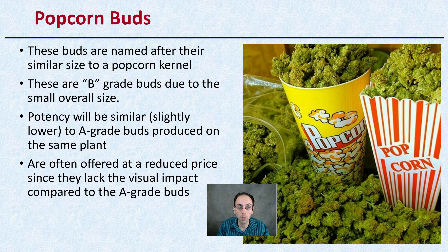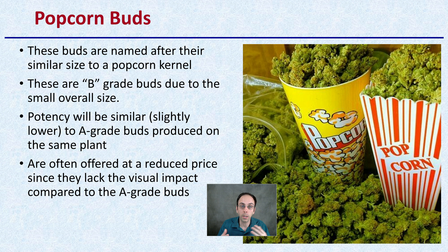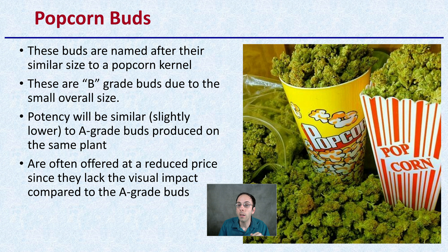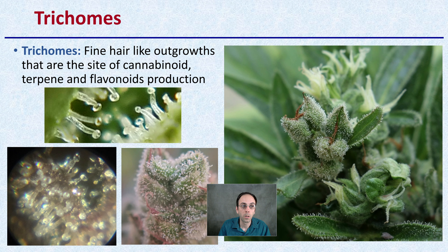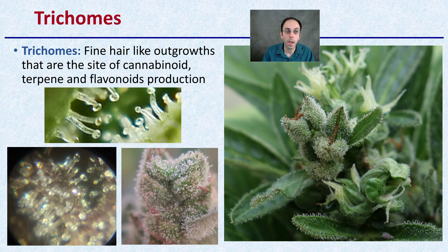Then we have something called popcorn buds. They get their name because they're a similar size to a popcorn kernel. These are B-grade buds due to their overall size, and the potency will be similar though slightly lower than A-grade buds produced on the same plant. They're often offered at a reduced price due to their lack of visual impact compared to large A-grade buds, which receive maximum light and have the maximum amount of terpenes and cannabinoids.